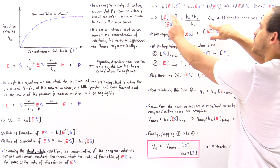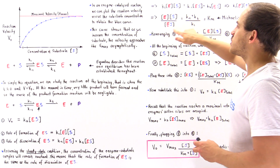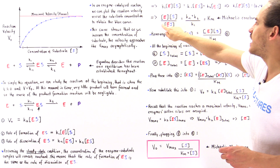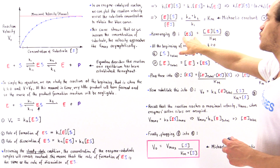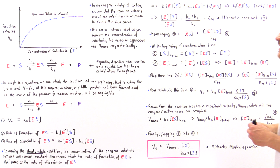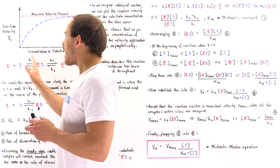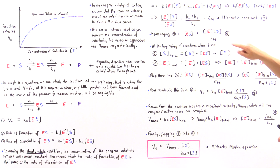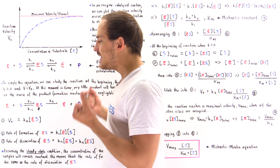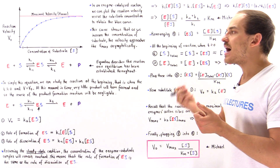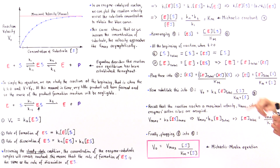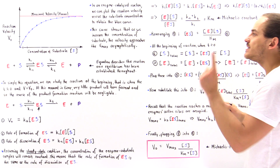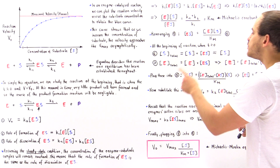This gives us equation 4. Rearranging to solve for the concentration of the enzyme-substrate complex, we get equation 5: [ES] equals [E] times [S] divided by Km. Now, returning to our initial assumption that time is approximately zero, we note that initially a large amount of substrate has not yet bound to the active site. This gives equation 6: the total substrate in the beaker equals the unbound substrate plus the substrate bound to the active site of the enzyme.